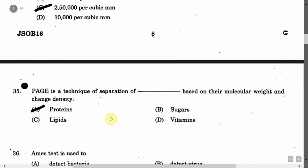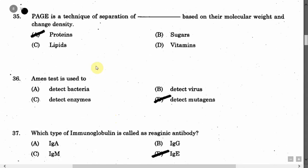The next question is: PAGE is a technique of separation of proteins based on their molecular weight and charge density. Option A: Proteins. Option B: Sugars. Option C: Lipids. Option D: Vitamins. The correct answer is Option A, that is proteins.